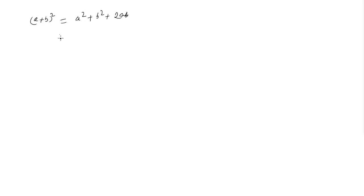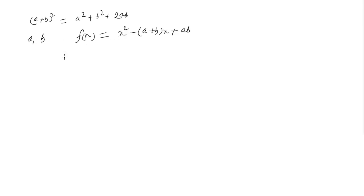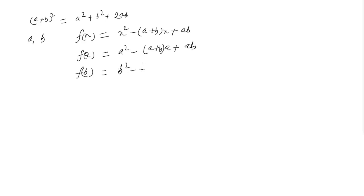Similarly, we will show that (a+b)² = a²+b²+2ab. Let us assume that a and b are the roots of a quadratic expression f(x). Our expression will be x² - (a+b)x + ab. Since a and b are the zeros of this expression, they must satisfy it. Putting a in place of x: a² - (a+b)a + ab = 0. Similarly, f(b) = b² - (a+b)b + ab = 0.